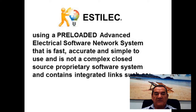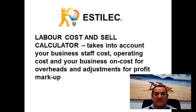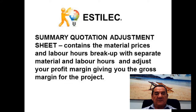This involves using a pre-loaded, advanced electrical software system that is fast, accurate, and simple to use — and is not a complex, closed-source proprietary system. It contains integrated links such as a labour cost and self-calculator that takes into account your business staff cost, operating cost, and business overhead costs, with adjustment for profit markup. A summary quotation adjustment sheet contains the material prices and labour hours breakdown, with separate material and labour hours, and adjusts your profit margin to give you the gross margin for the project.